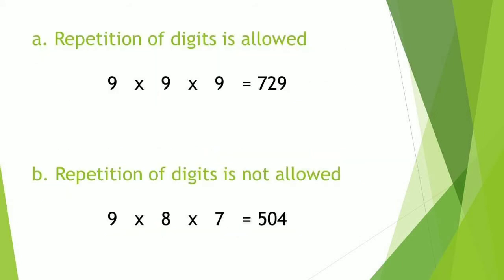If repetition of digits is allowed, the first digit can be any number from 1 to 9, so 9. The second digit, since there's repetition, can also be any number from 1 to 9. And the third digit, same thing - any number from 1 to 9. So we just multiply 9 times 9 times 9, which equals 729. So there are 729 possible 3-digit numbers if repetition is allowed.